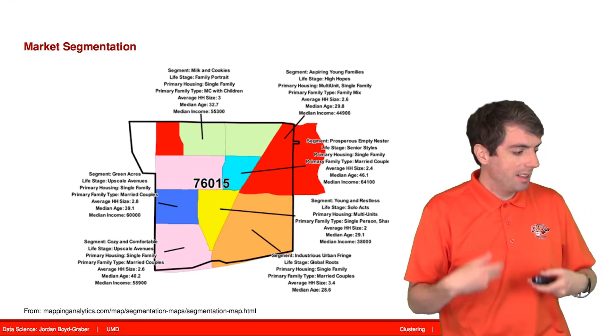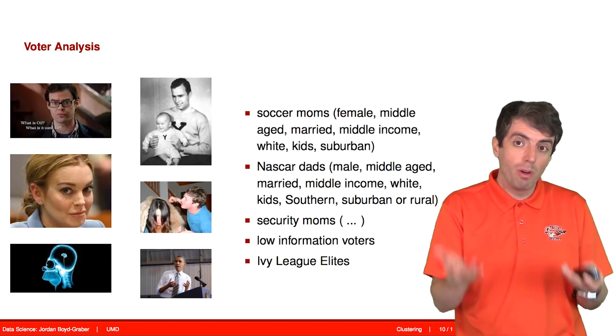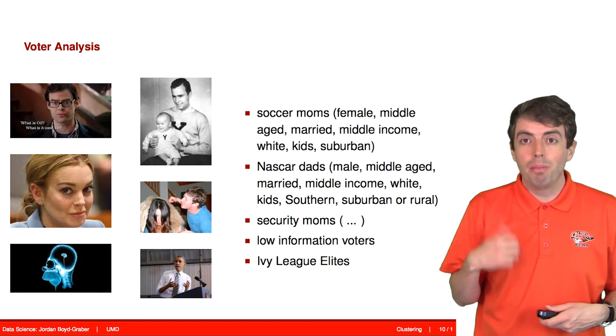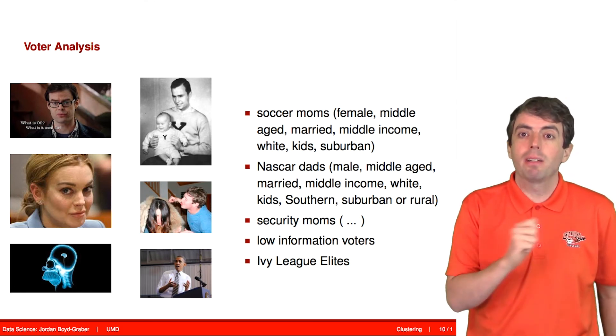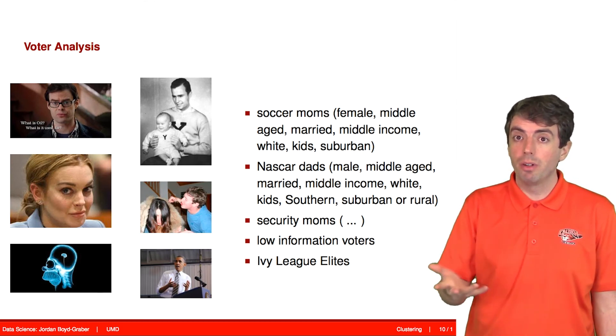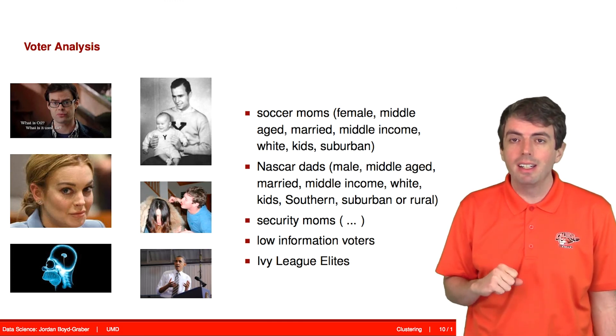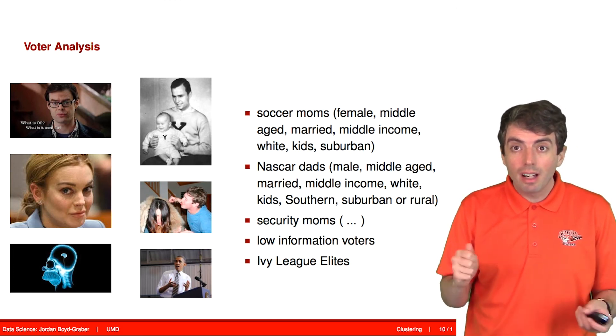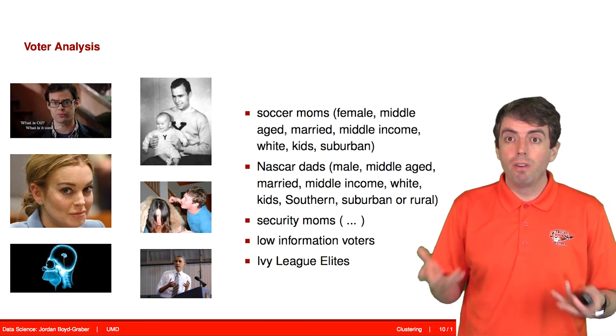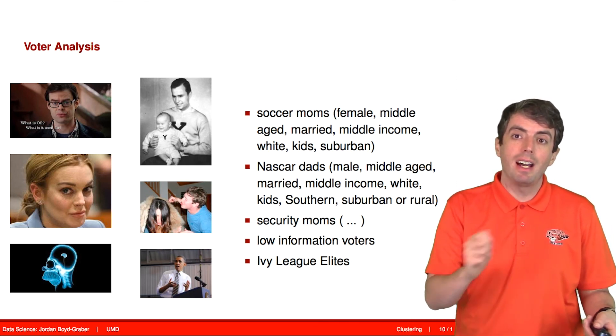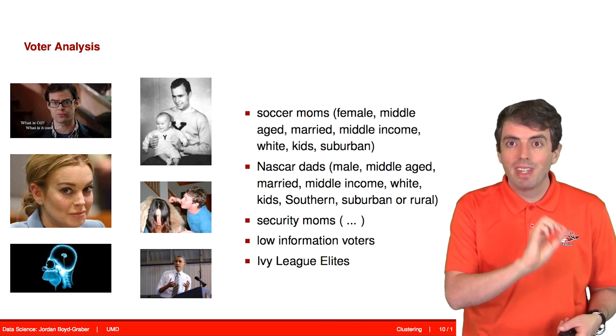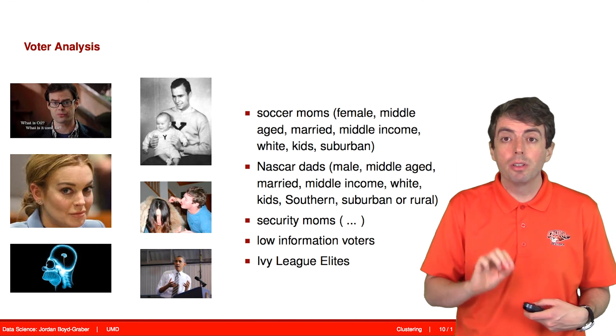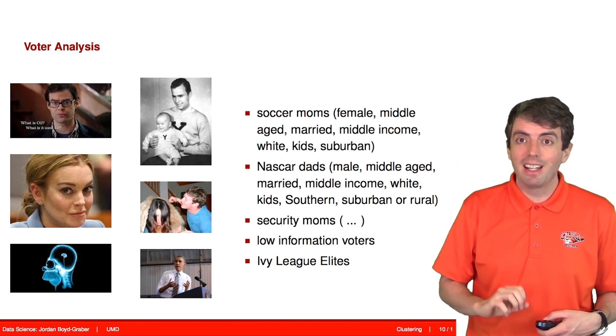If it works in advertising, you can also do that in voter analysis. Politicians want to send out specific messages to specific kinds of voters. This is called micro-targeting. You can use clustering to discover the different types of voters that exist in the world and send out special political advertisements to those groups so that they will like your candidate more.